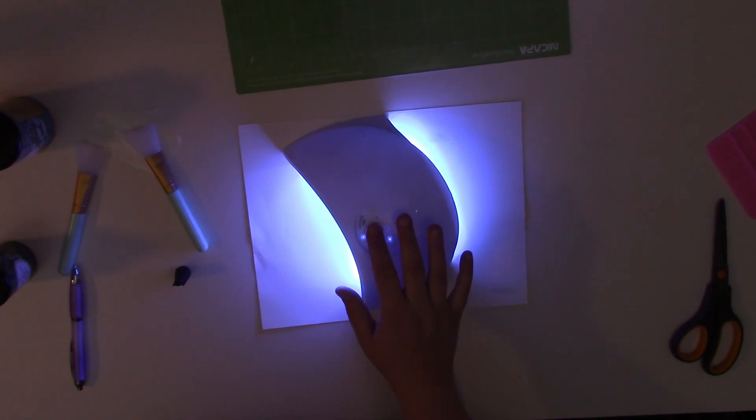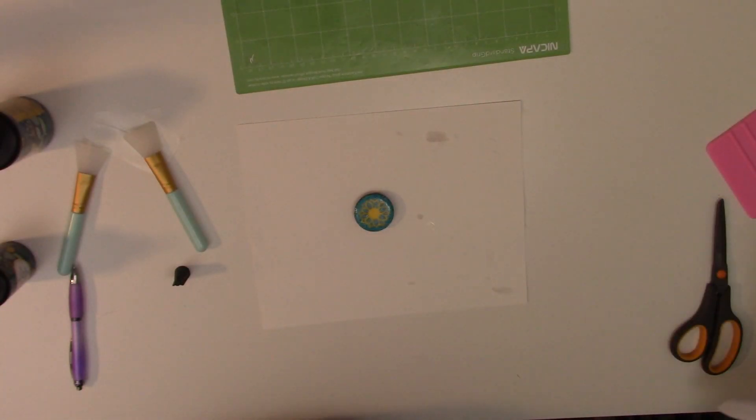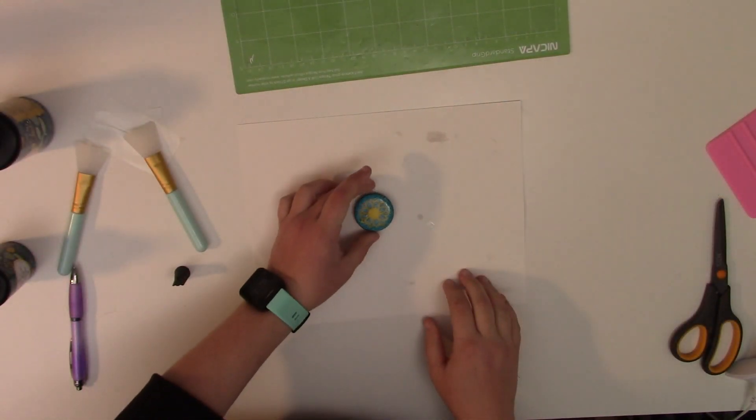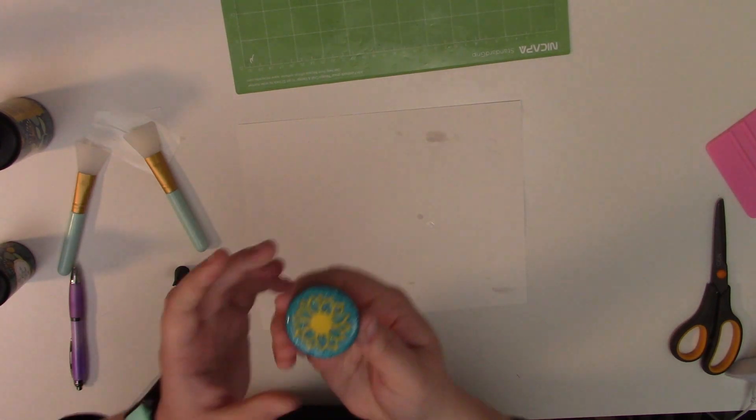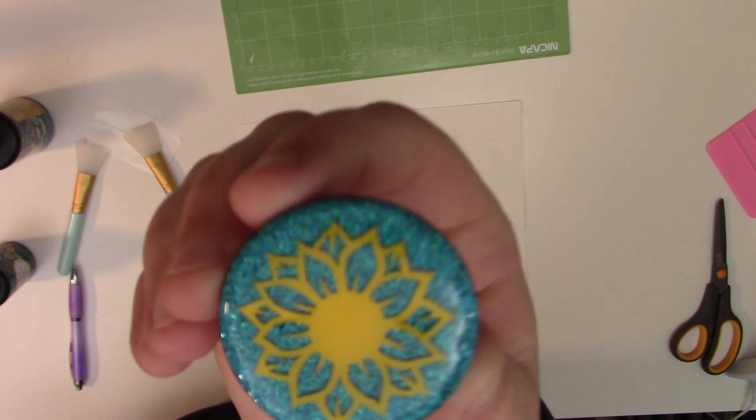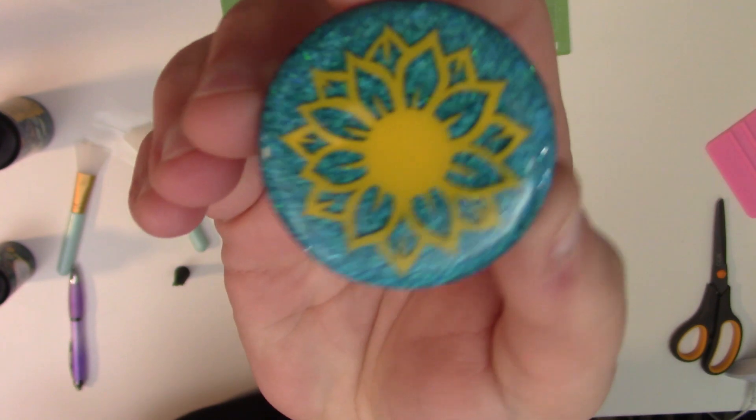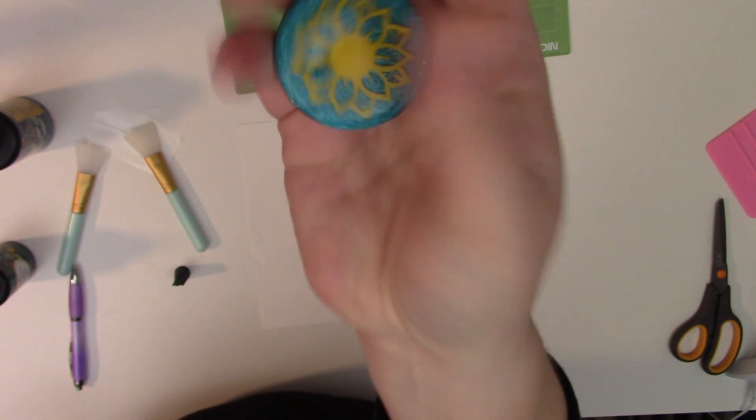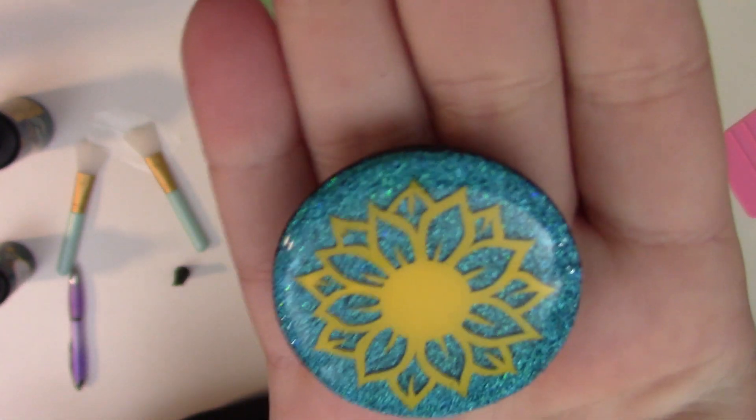Once our timer has gone off, we can turn off our light, move it to the side. And our UV resin is cured. Our finished pop socket came out really cute. And you can see how small the sunflower is. I hope you guys had such a fun time checking out our beautiful sunflower pop socket.